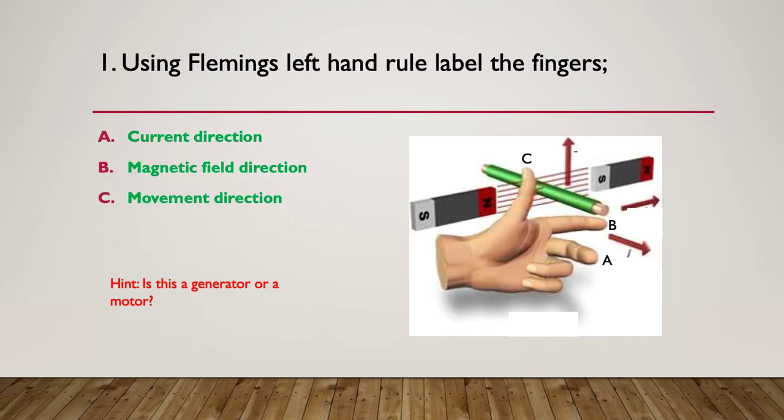So A indicates the direction of the current flow. That's through the green wire. B is the magnetic field direction. You can see the magnetic field. It's flowing from north to south. So that's B is your finger sticking straight out. And C is the movement of direction. So we're physically moving the wire through the magnetic field in the vertical plane. So it's using Fleming's left hand rule for generators.